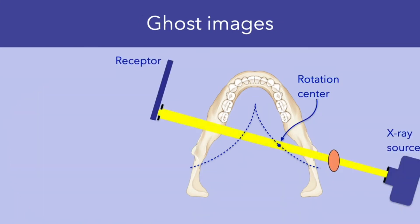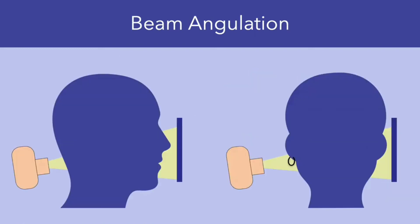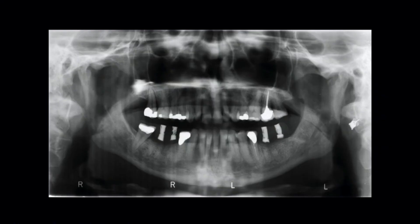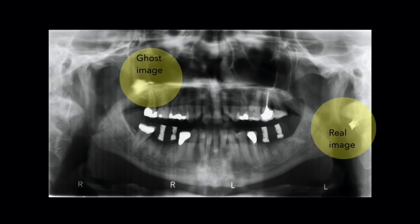Objects that lay between the X-ray source and the rotation center cast a ghost image. Note that ghost images are cast on the opposite side of the true anatomic location of the object. Because the object is located outside the image layer and very close to the X-ray source, ghost images are blurred and markedly magnified. When making a panoramic radiograph, the beam is angulated relative to the horizontal plane with a slightly upward inclination. This angulation causes the ghost image of a structure to be cast higher up than its real image. For example, in this radiograph we see a radiopacity over the right maxillary tuberosity; however, this radiopacity is a ghost image of the earring from the opposite side. Note that the ghost image is blurred and magnified, cast on the opposite side, and cast higher up relative to its real image.